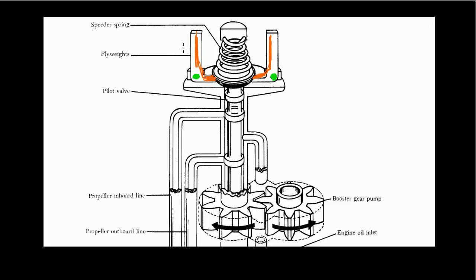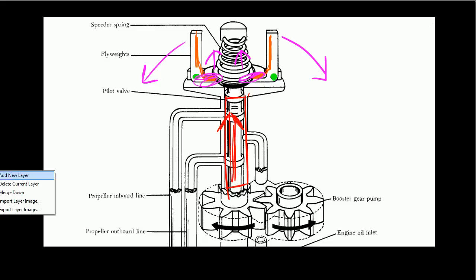Okay. So, once again, centrifugal force tends to pivot the flyweights outward, and it tends to lift the bottoms of the flyweights here and here. It tends to lift them upward. And what that does is that also moves this pilot valve here. It tends to move it upwards as well. Cool. Great.